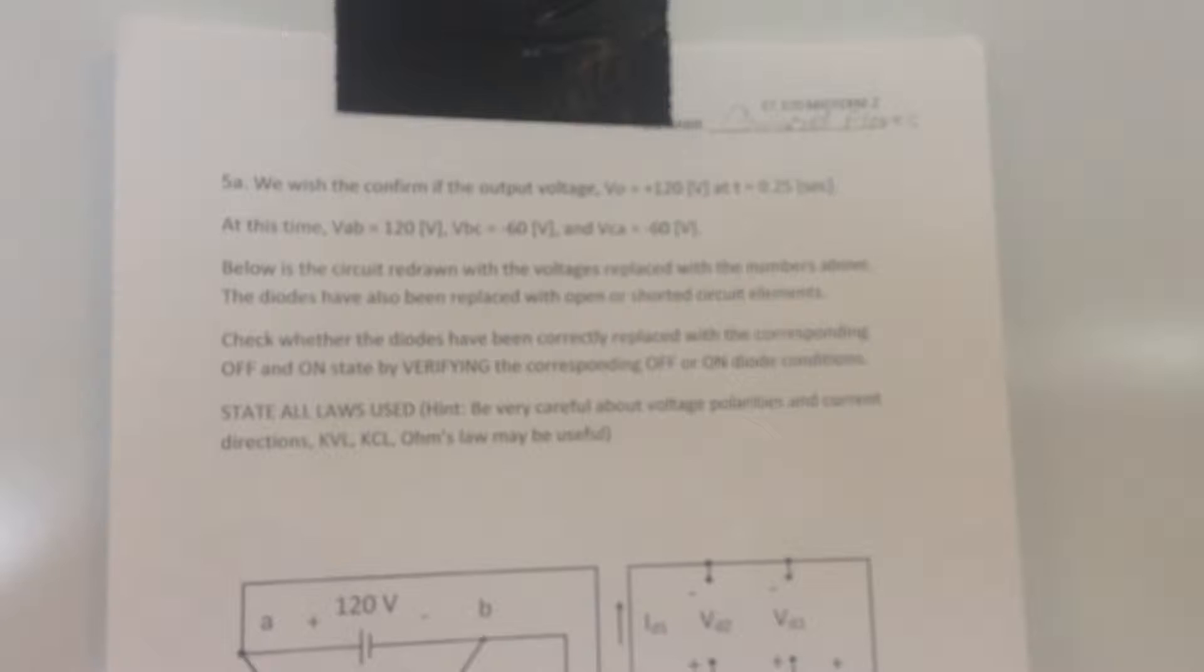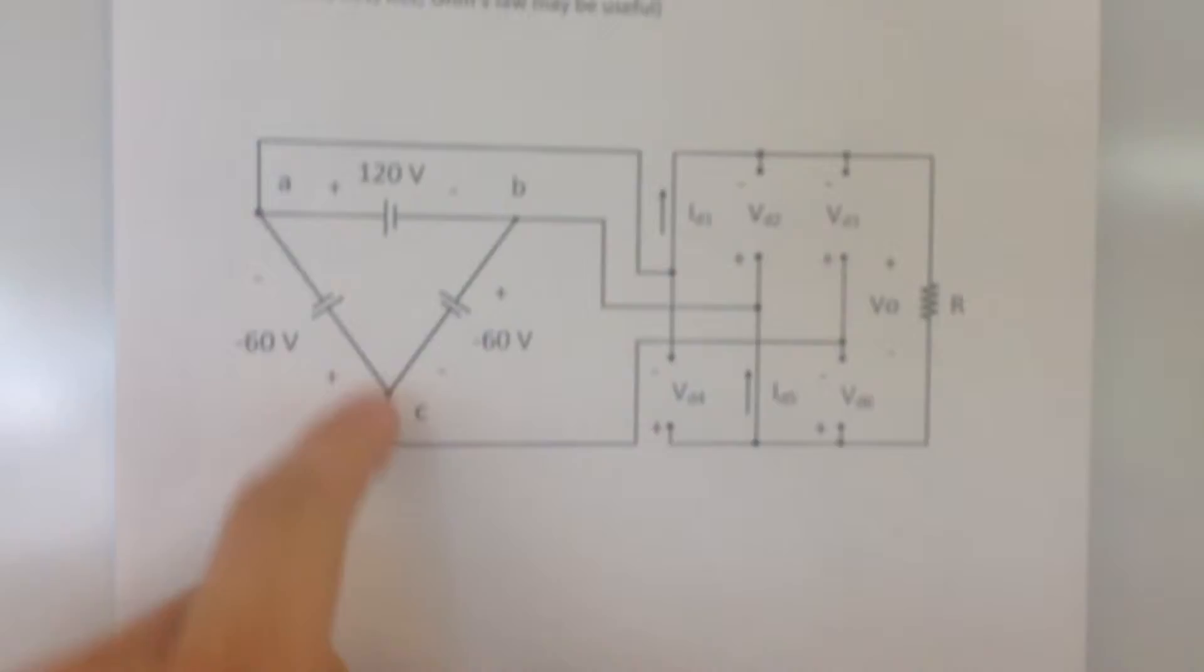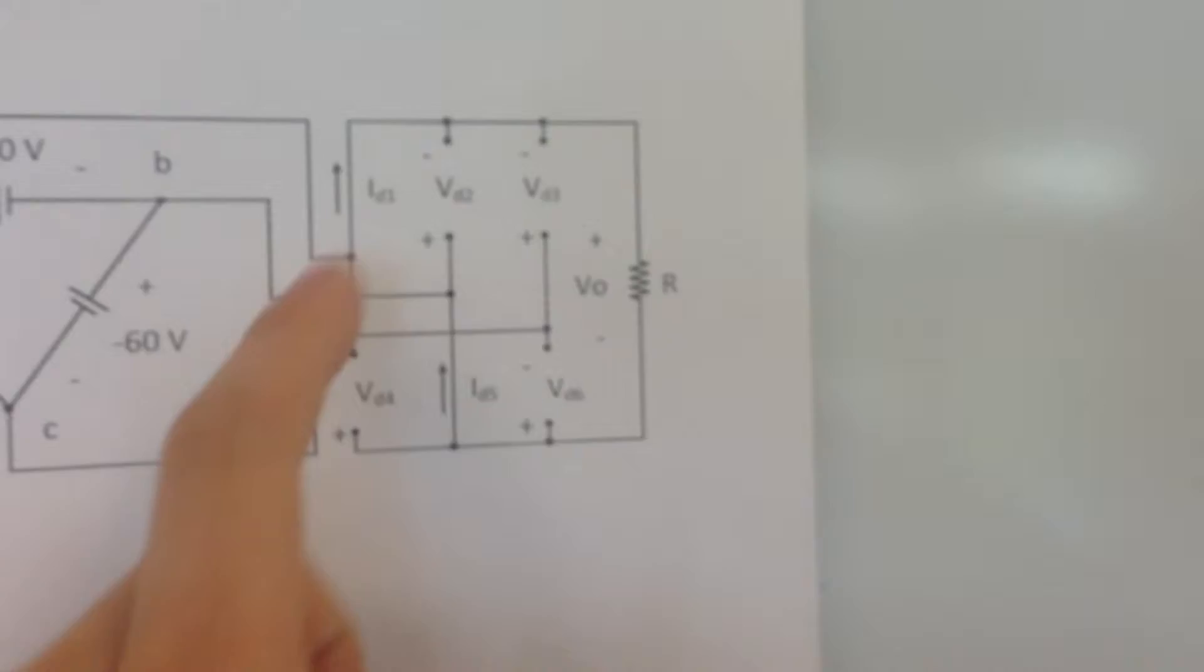So, I walk over here, this is the first page, the instructions page. Now if you need to pause the video for a second and look at the directions, it would be fine. So, we got VAB is 120 volts, VBC is negative 60, and then VCA is negative 60.